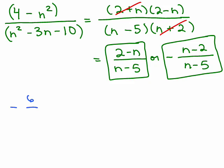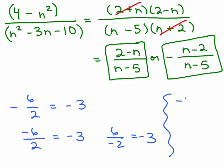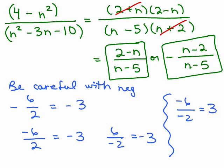Negative 6 over 2, we know, is negative 3. You could think of that as negative 6 divided by 2, which is negative 3, or you could think of it as 6 divided by negative 2, which is negative 3. But negative 6 over negative 2 would give you positive 3. So you see how you can't put the negative sign in both places. So, watch out, be careful with negative signs. Those negative signs trip lots of people up.